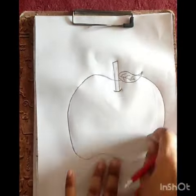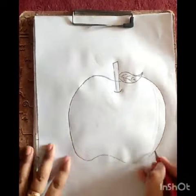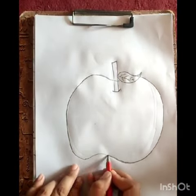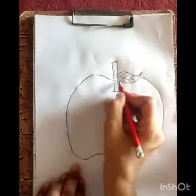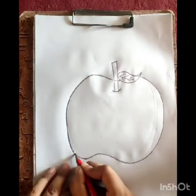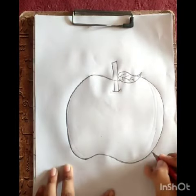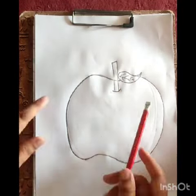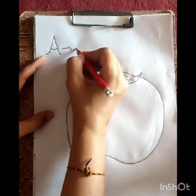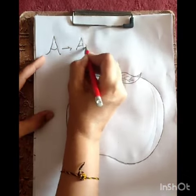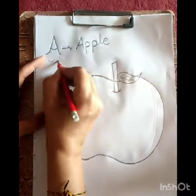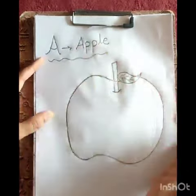We will also add a stem and a leaf. Once we have the outline, we can start shading the apple. Once we are happy with the shading, we can add some details to the apple — we can add a few cracks in the skin or some highlights to make it look shiny.